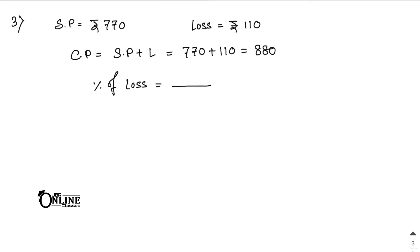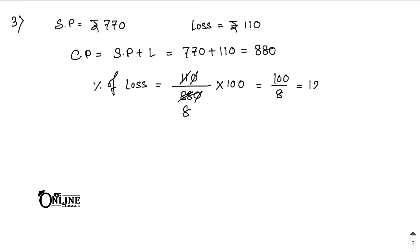Percentage of loss equals CP minus SP, which is the loss amount 110, divided by CP which is 880, into 100. After cancellation, that gives 100 by 8, which equals 12.5%. That is your answer.